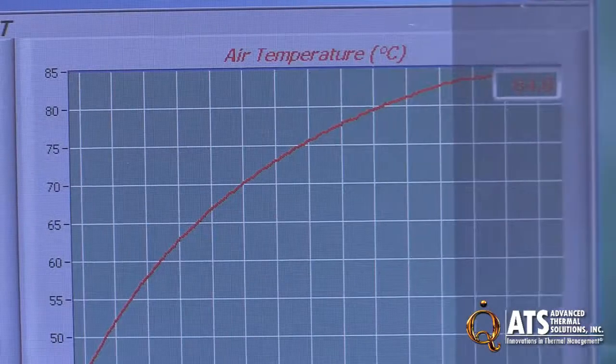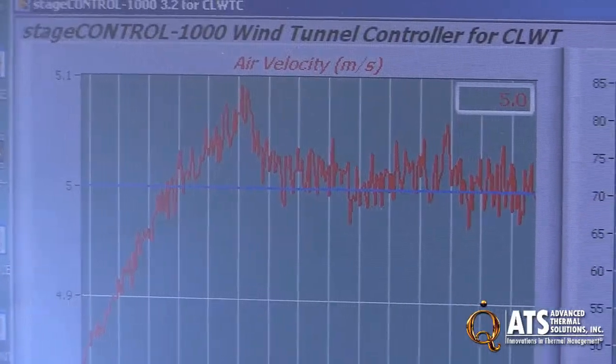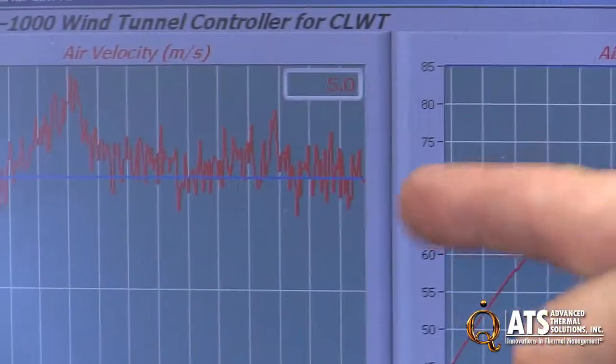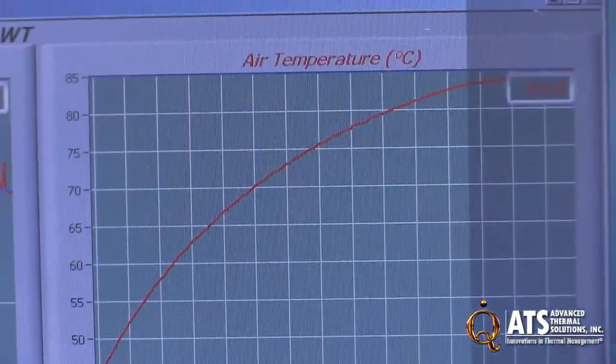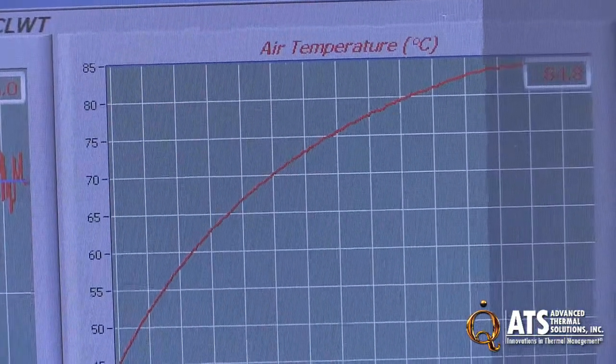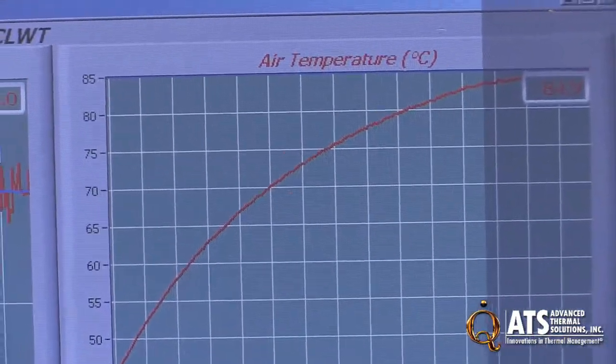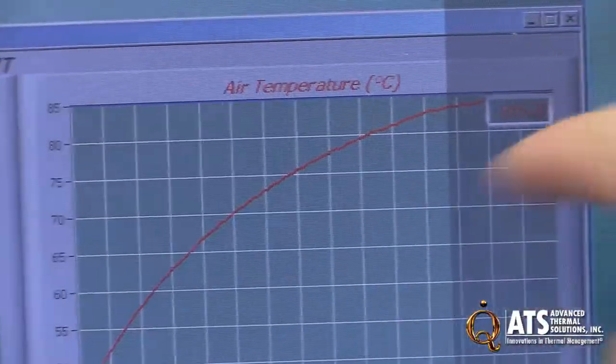You can see the fluctuations here because the scale changed, so you see fluctuations, but they are very small—like 0.1 from lower side to upper side, around 5 meters per second. As you can clearly see, the temperature is very smoothly reaching 85 degrees.